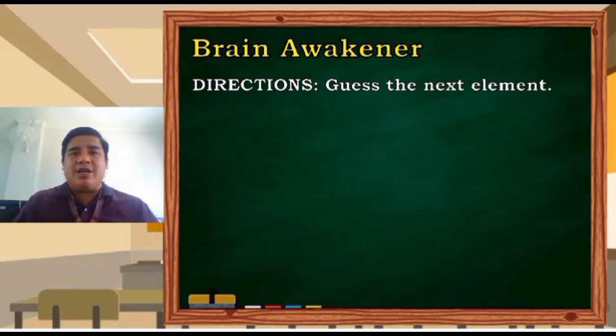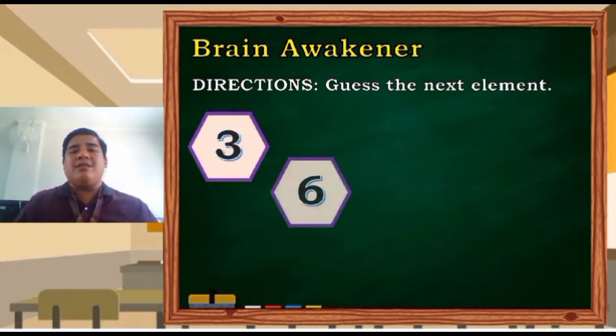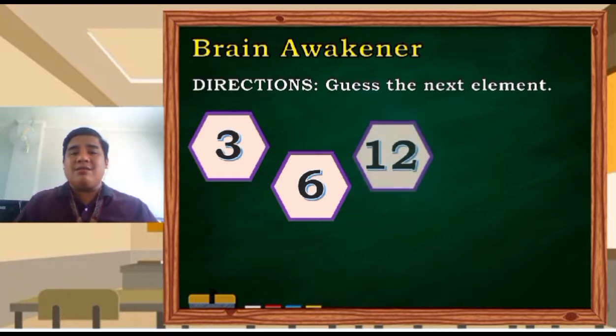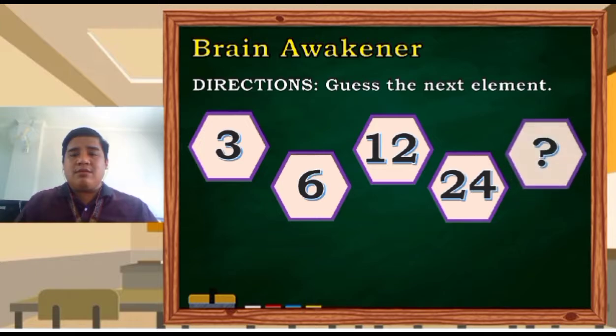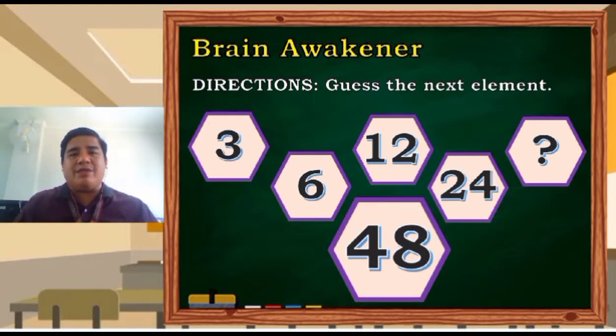What about this one? 3, 6, 12, 24, missing term. Can you guess the next term? It is 48. So how did we get 48? Yes! We multiplied the preceding term by 2.